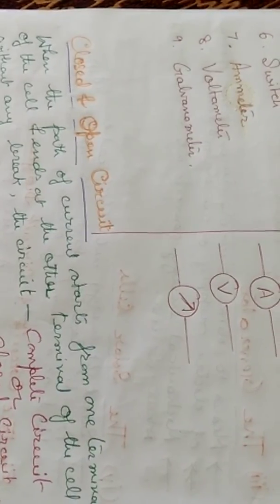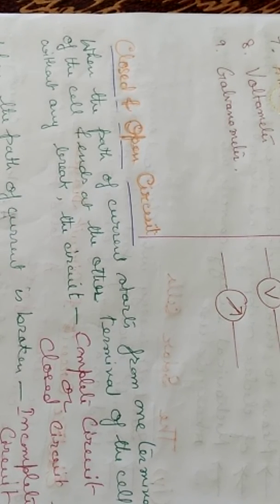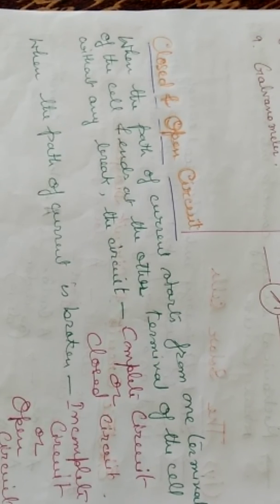What is a closed and open circuit? When the path of the current starts from one terminal of the cell and ends at the other terminal without any break, the circuit is called complete or closed circuit. When the path of the current is broken, that is incomplete or open circuit.